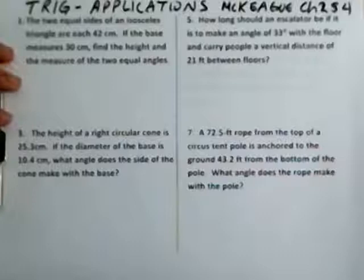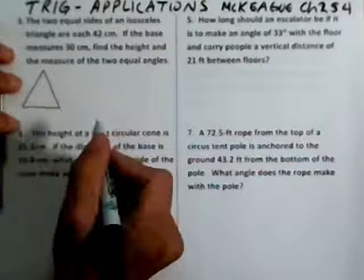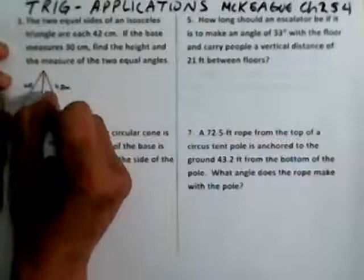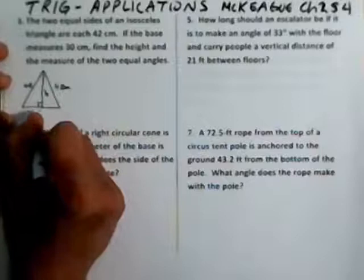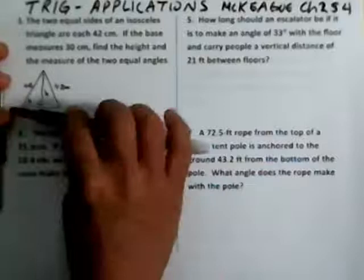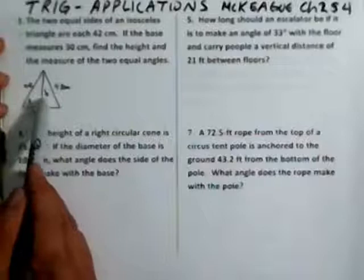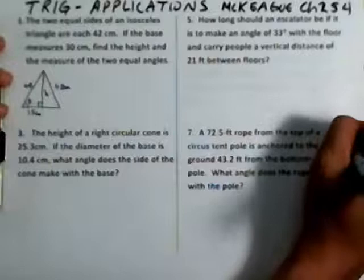I'm going to draw the isosceles triangle with both equal sides labeled 42 centimeters. The height drops straight down, and since the base is 30 centimeters, it gets split into two halves of 15 centimeters each. I'm trying to find angle theta — the base angle — as well as the height. Drawing this information is probably going to be half the battle: 42, 42, 15, and I'm looking for theta and height.